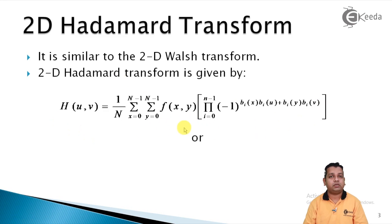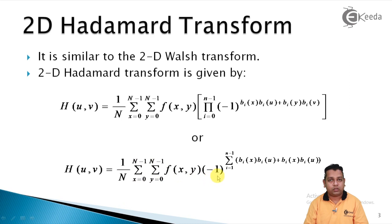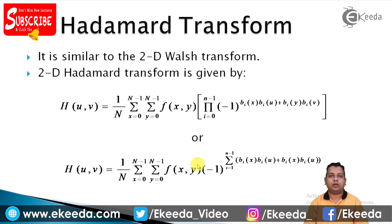We can have another type of representation for the two-dimensional Hadamard direct transform. Again, on the left-hand side we represent capital H(U, V). It is given by the same 1/N denominator multiplied by the two summation signs, one for X ranging from 0 to N-1 and Y also ranging from 0 to N-1. The f(X, Y) is multiplied by the kernel, which is minus 1 to the power of the summation for i ranging from 1 to N-1 of the terms b_i(X)·b_i(U) + b_i(Y)·b_i(V). These are the two alternative ways to represent the direct Hadamard transform.